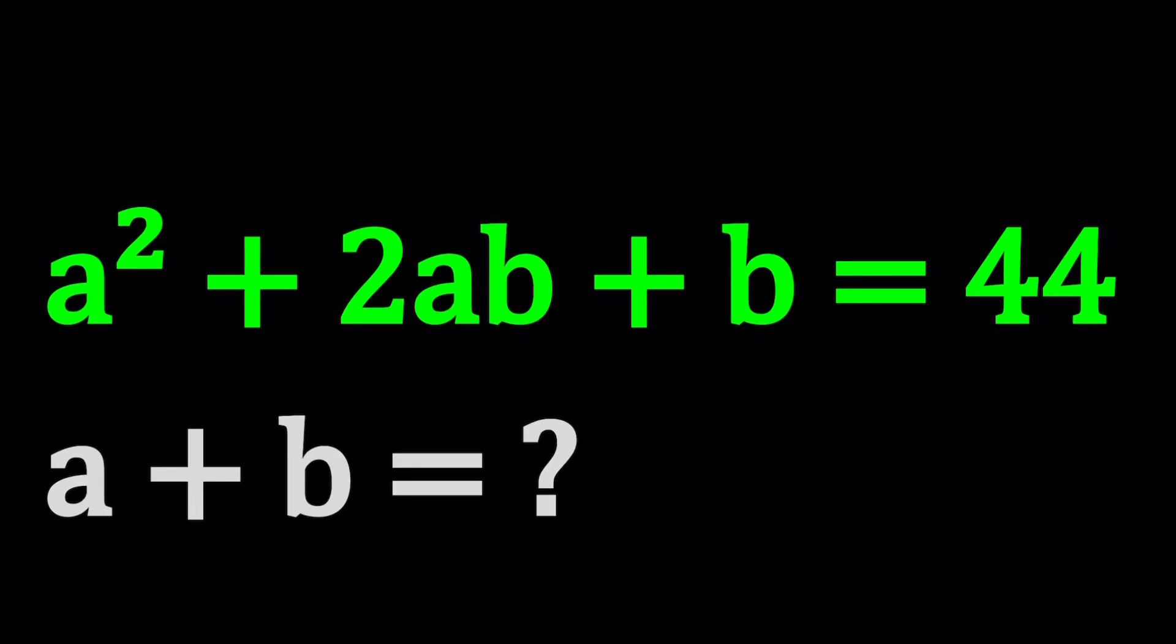Hello everyone. In this video, we're going to be solving a nice Diophantine equation. In other words, an equation with integer solutions. We have a² + 2ab + b = 44, and we're going to evaluate a + b. Once you find the values of a and b, finding a + b shouldn't be too hard, right?